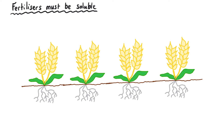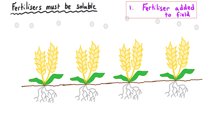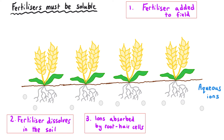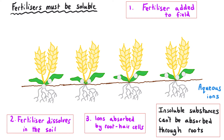When selecting chemicals for fertilisers, it's really important that the salts they contain are soluble in water. When the farmer spreads the fertiliser over their field, the compounds will ultimately dissolve in rainwater or water already in the soil and become aqueous ions. It's only then that they can be absorbed by the root hair cells of the plant. If the fertiliser is insoluble, it won't be absorbed — it will just sit on the surface and eventually get washed off into rivers.